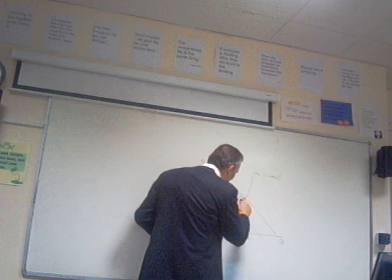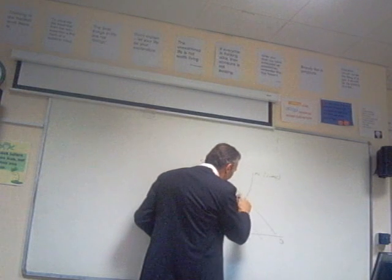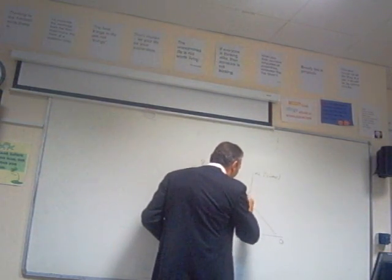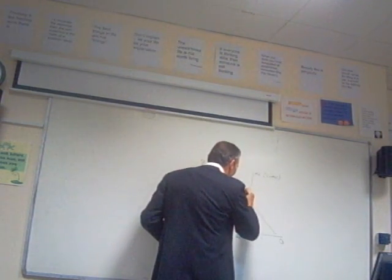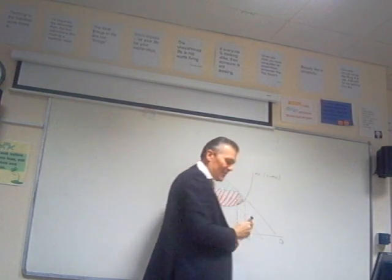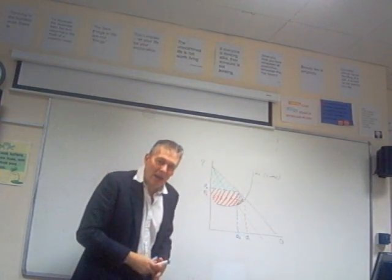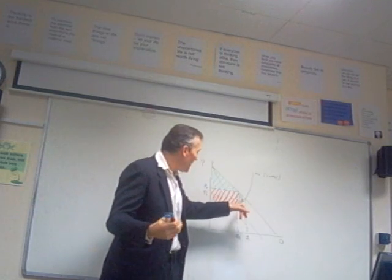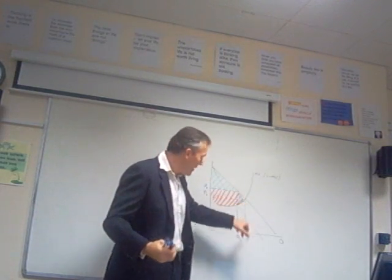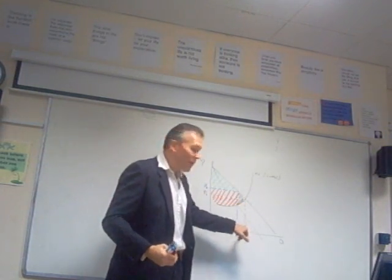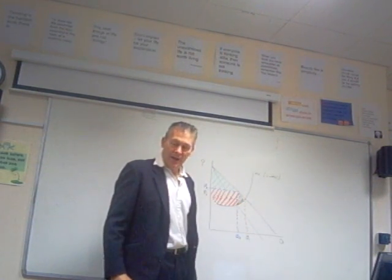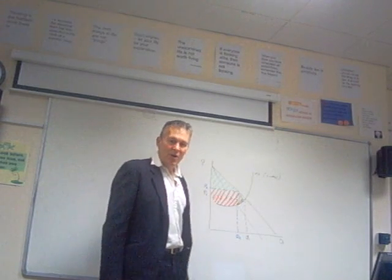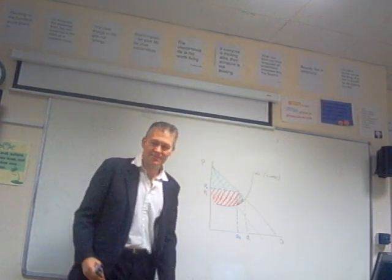Notice here — this is the area that is lost. The blackened area here is the deadweight loss to society. That is the amount of benefit to society that is lost through reduced output and higher prices caused by a monopolist.